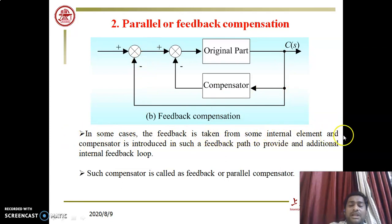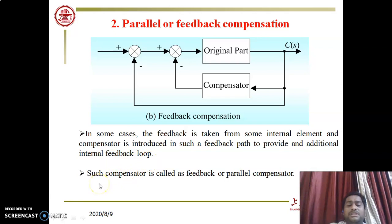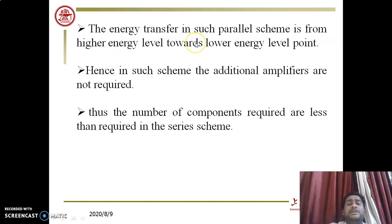In feedback compensation, feedback is taken from some internal element and the compensator is introduced in the feedback path to create an additional internal feedback loop. The compensator takes C(s) — the output of the original control system — as its input. The energy transfer in a parallel scheme is from higher energy level toward lower energy level, so such compensators always generate gain from higher to lower level.